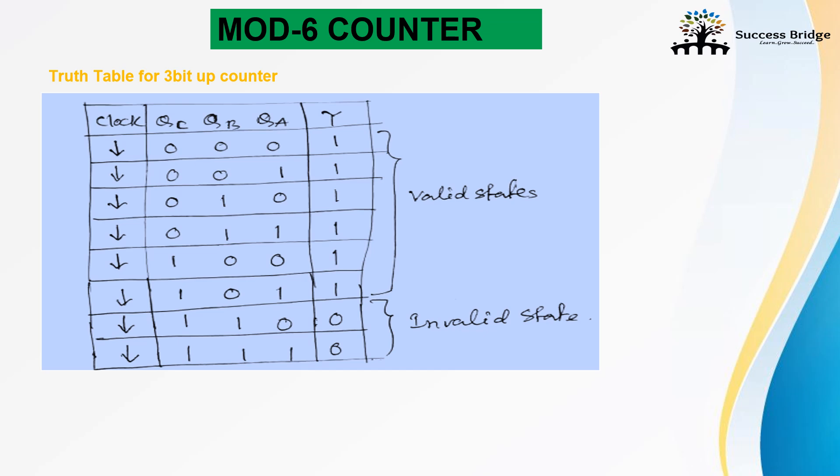This 110 and triple 1 is considered as invalid state. For mod 6 counter, it counts up to 0 to 101. We required a reset signal. We are considering a clear signal is used to design this mod 6 counter.